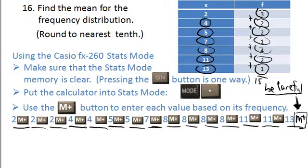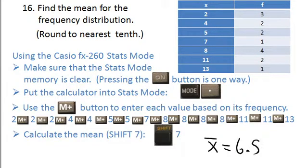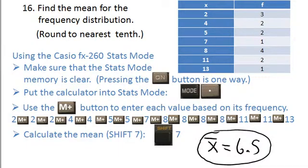Once you get all the numbers in and you're satisfied they're entered correctly and the right number of them, then you simply calculate the mean by using shift+7. When you do shift+7 and round your answer to the nearest tenth, you should get a mean of 6.5. Remember you're asked to round to the nearest tenth. Take your time, be careful, and check everything that can be checked as you go along.